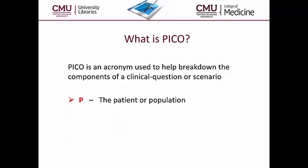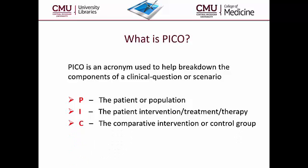P stands for the patient or population that you are looking at. I is the patient intervention, treatment, or therapy you are interested in. C is the comparative intervention or control group to consider. And O is your desired patient outcome.